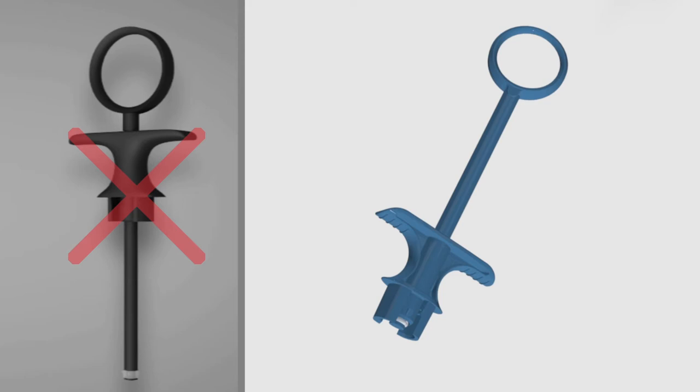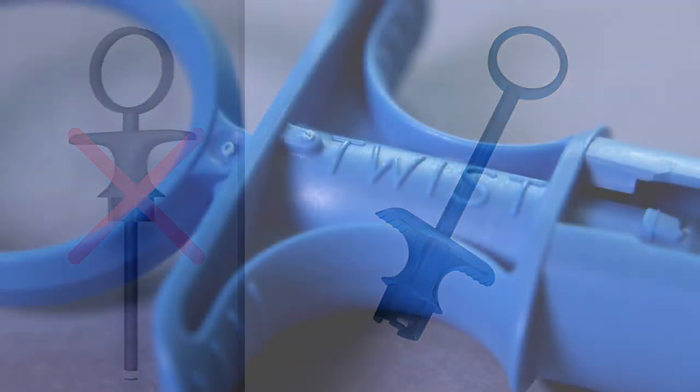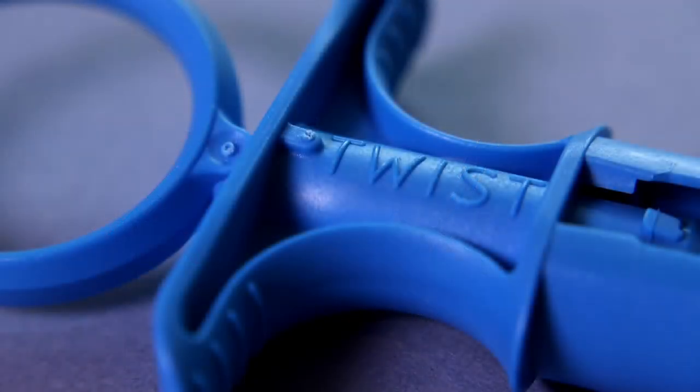ULTRA SAFETY PLUS TWIST should now be used with a blue TWIST autoclavable handle, which has a TWIST engraving on the finger grip.